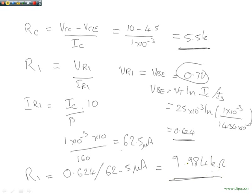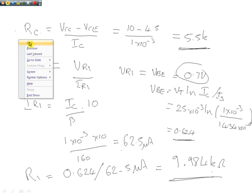And the only other resistor there to find is the value of R2, which is the upper bias resistor. So again, we'll move on. So now here we're going to calculate R2.